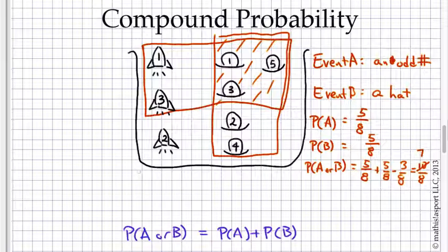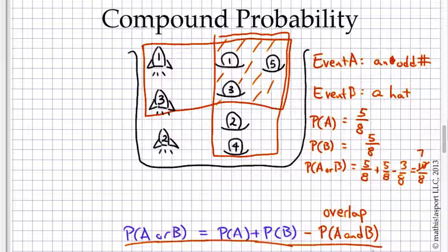So our formula here at the bottom, there's got to be something changed about it. And here's what we have to do. Maybe you've already figured this out. We have to subtract off the overlap, namely the probability that it's both A and B. We're going to call that the overlap. And that is our real formula for the compound probability, A or B.